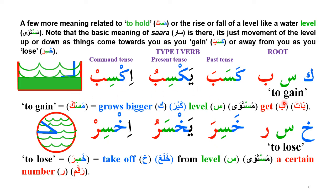The picture shows Kaf growing but at a 90-degree angle, exactly like the shape of Kaf. In a bar-like container, the level of whatever is coming to you is growing — that is the visual meaning of 'Kasaba,' to gain.